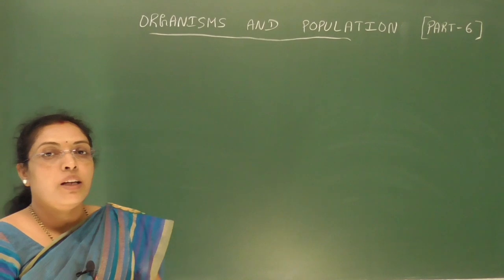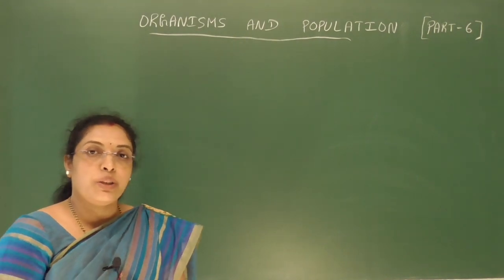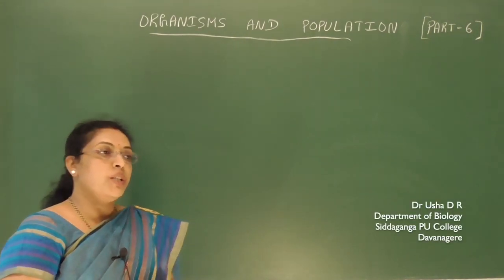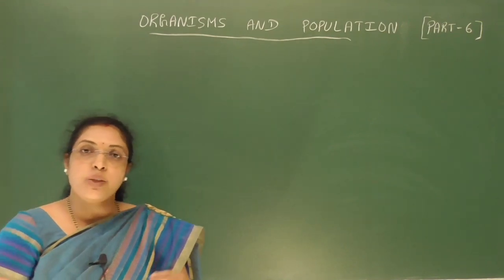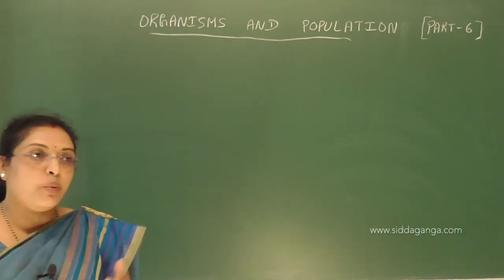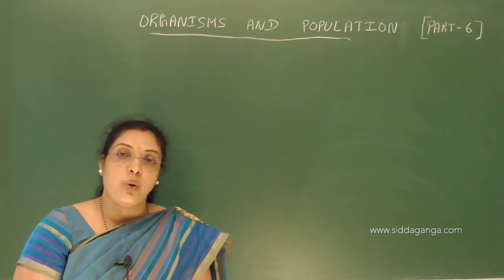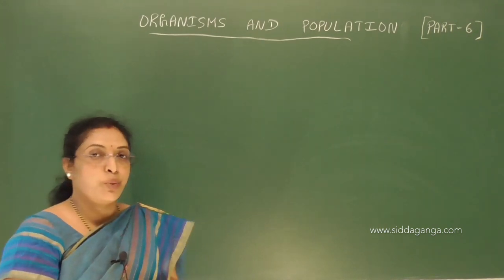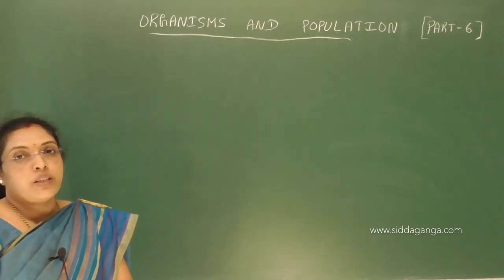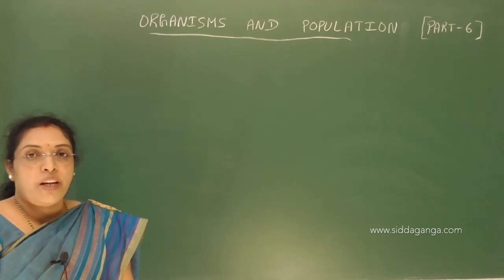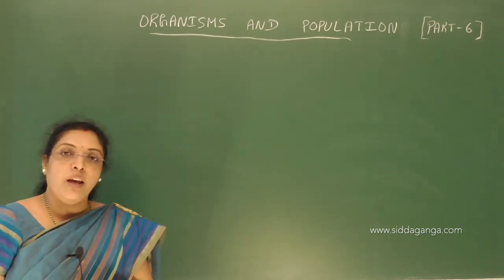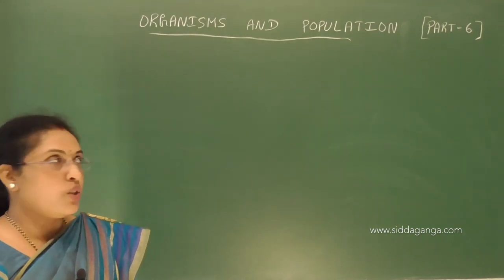Namaste children. Let us continue with the topic organisms and populations. In our last class we discussed about growth models — logistic growth and exponential growth. In this class we'll discuss about population interactions. As I mentioned, there are six types of interactions.